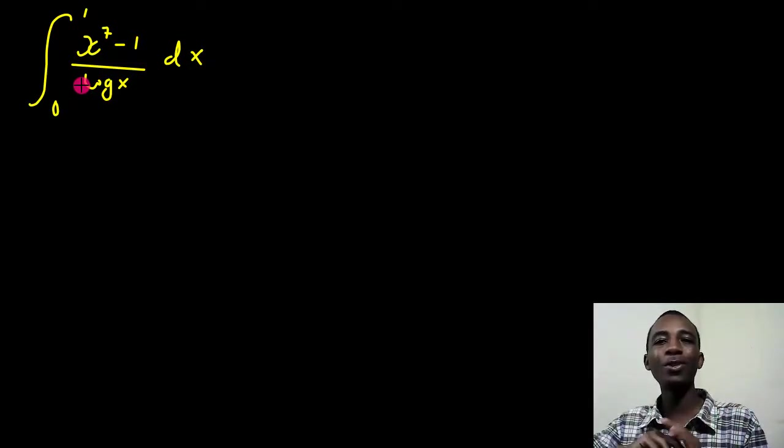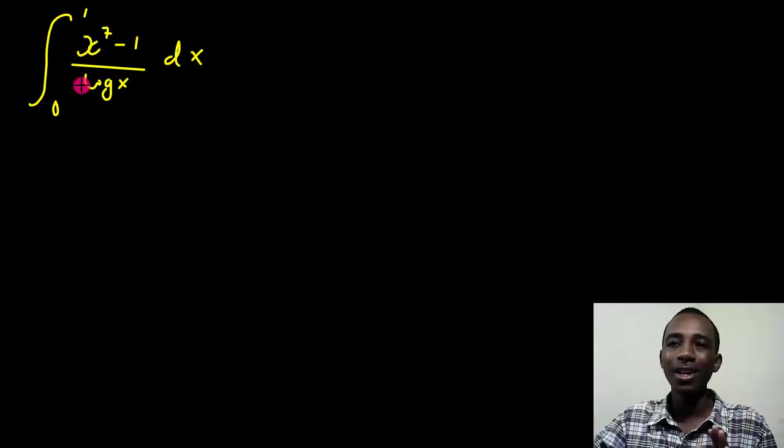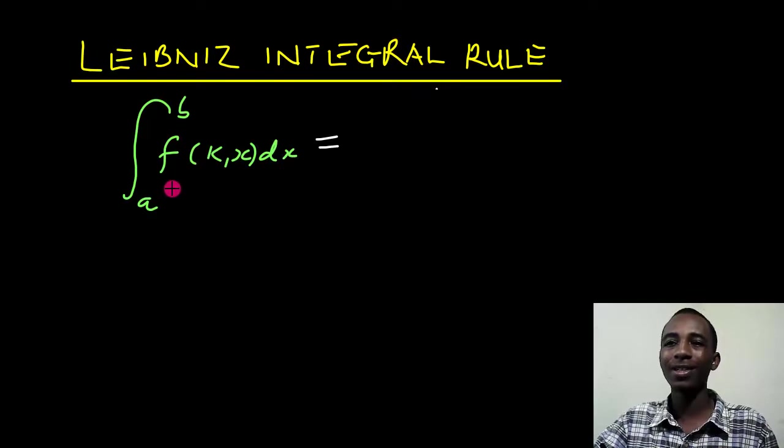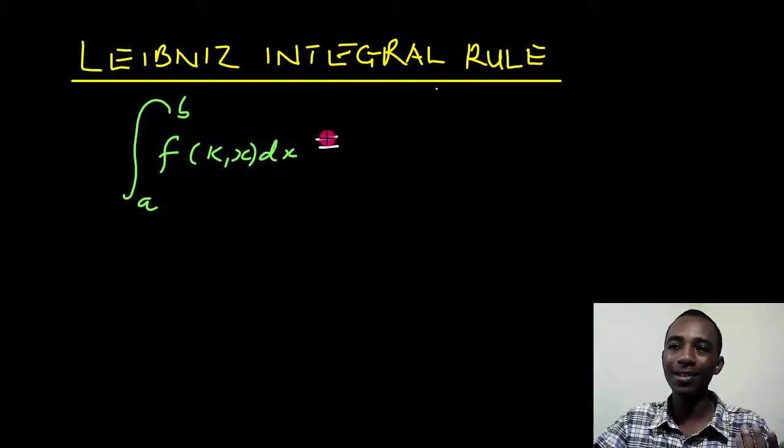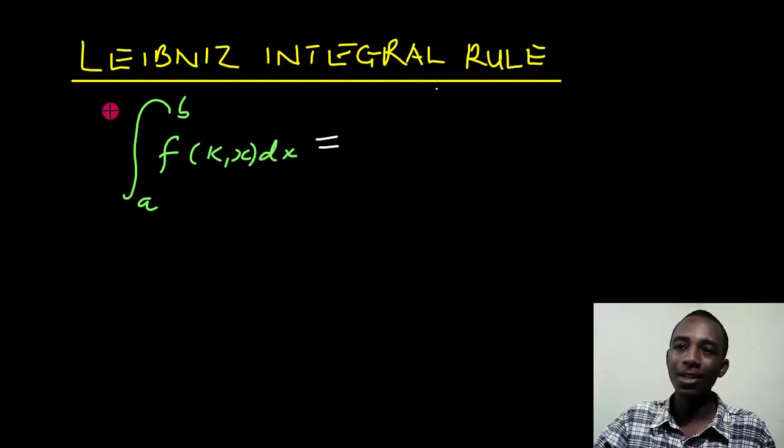So for this integral, we're actually going to use something called the Leibniz integration rule, and what the Leibniz integration rule says, basically, is that if I have an integral from a to b of a function that takes up two variables, k and x, if I have an integral of such a kind,